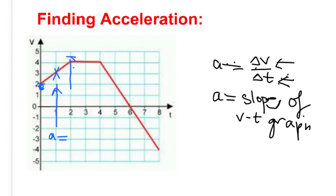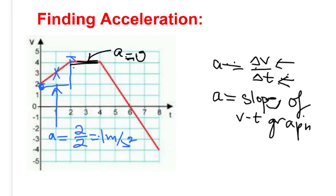Here I can see the slope is zero, so all along this line, acceleration equals zero. And then all along the last line, I want you to try this out for yourself — pause the video. Acceleration is, again, rise over run. Taking these two points, the rise is from four to zero — so that's actually a fall — so that's negative four. The run is from four to six, so that is two. My acceleration is equal to negative two meters per second squared.